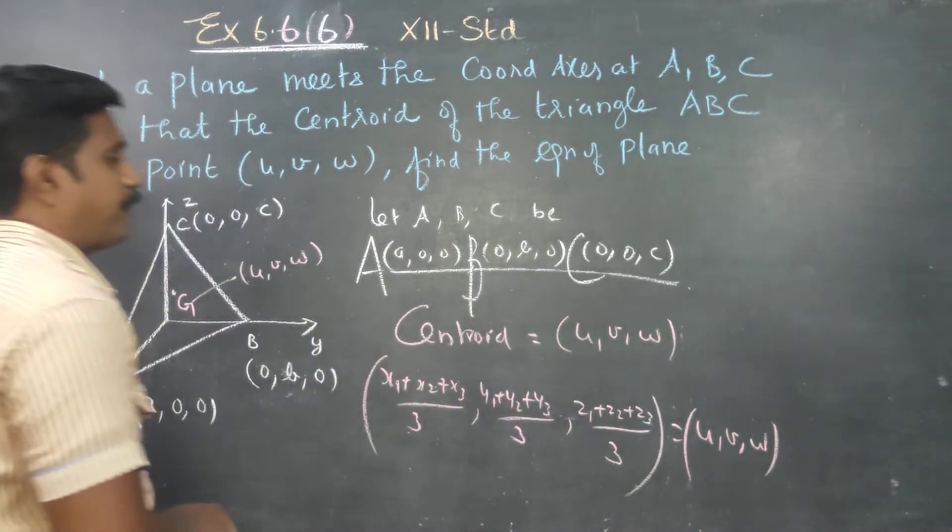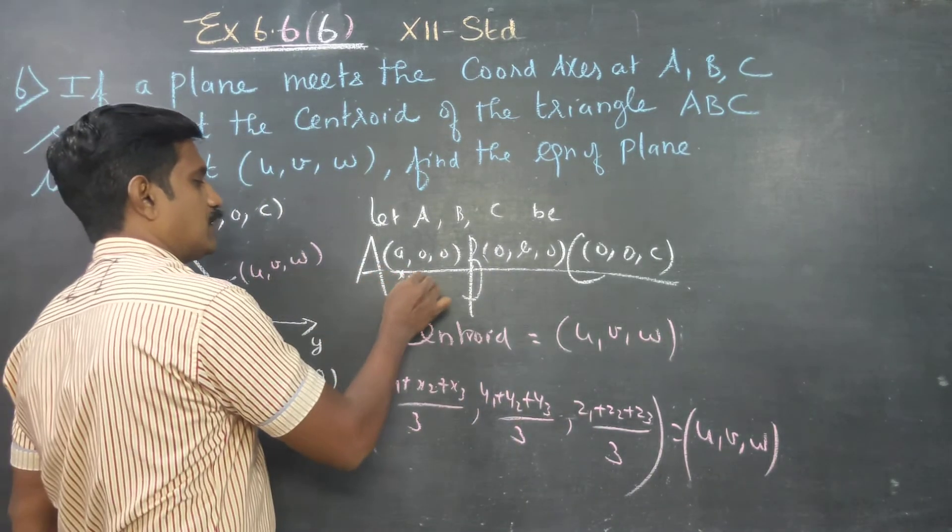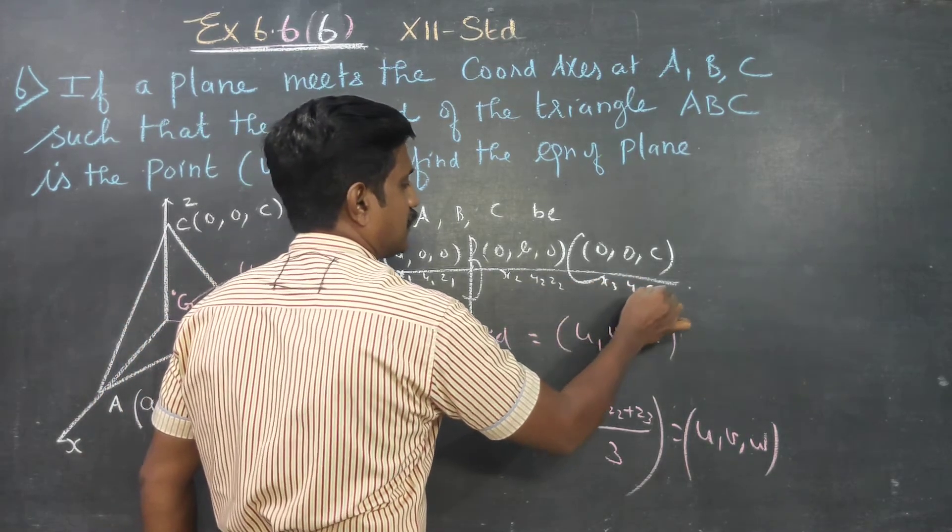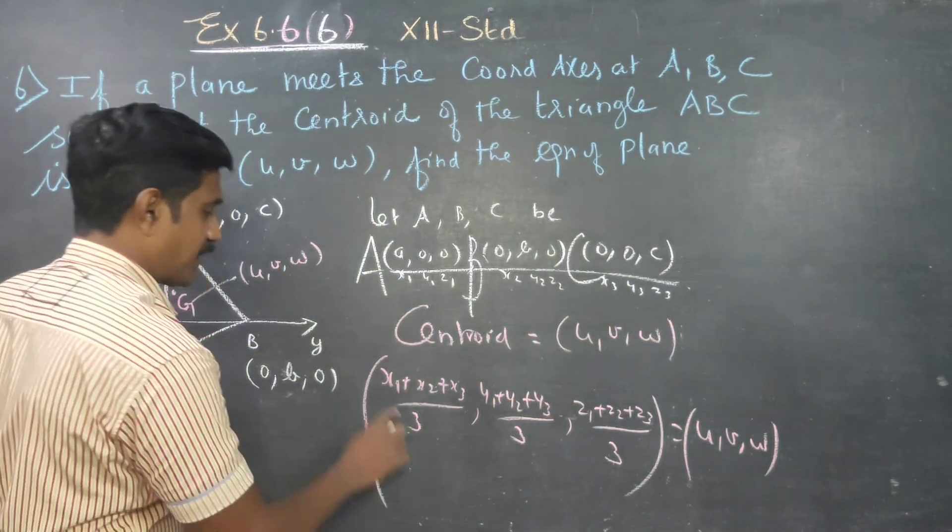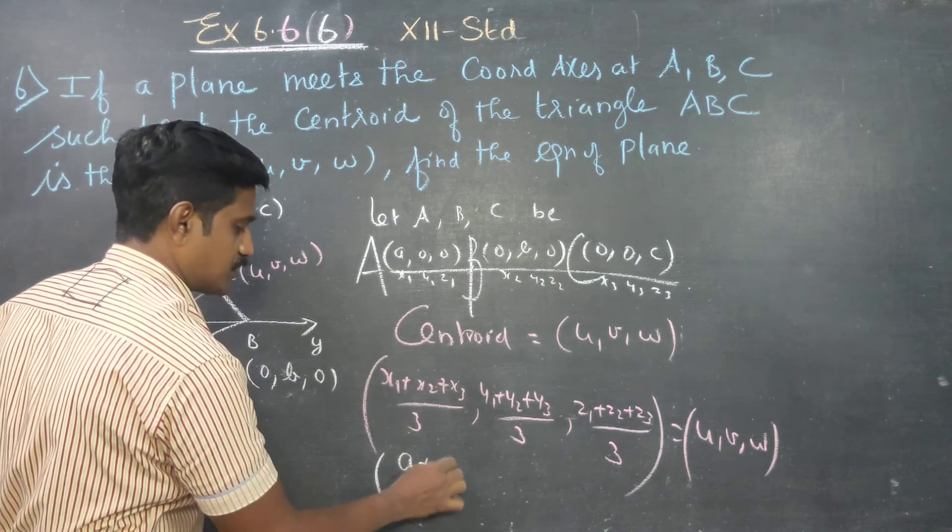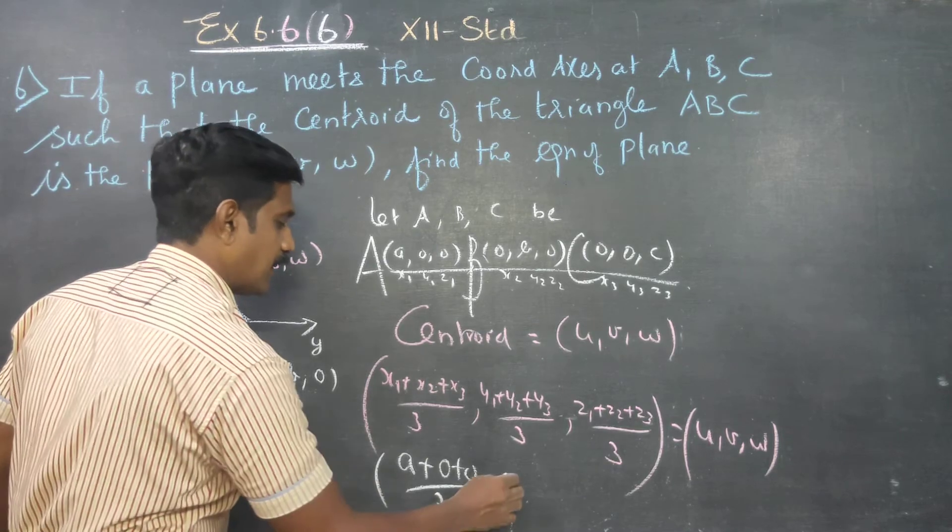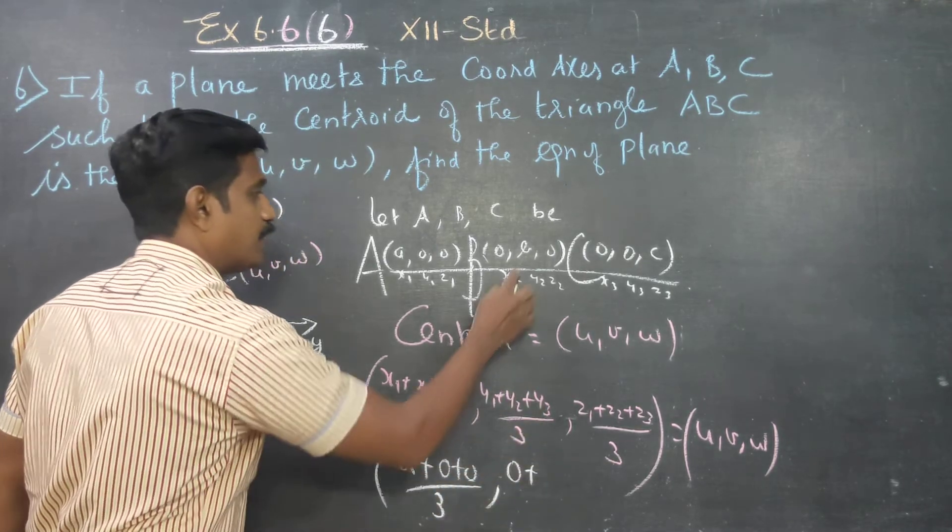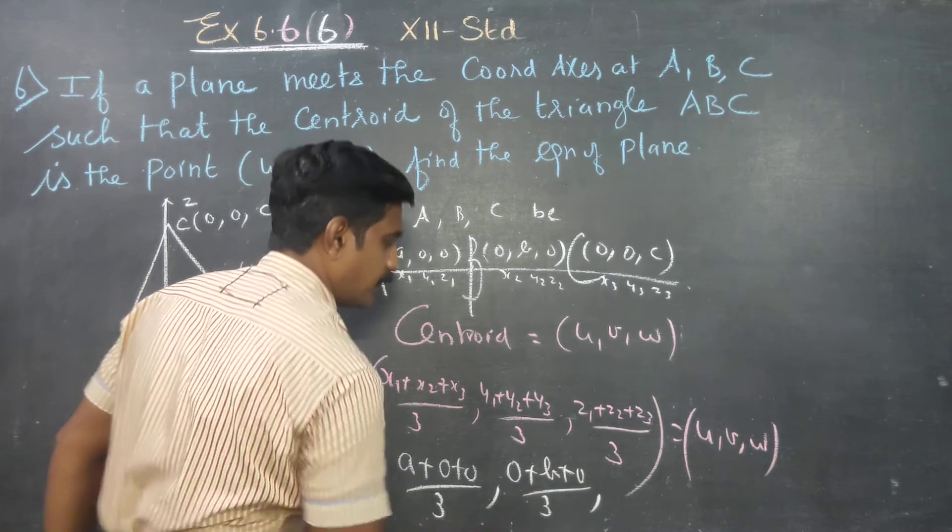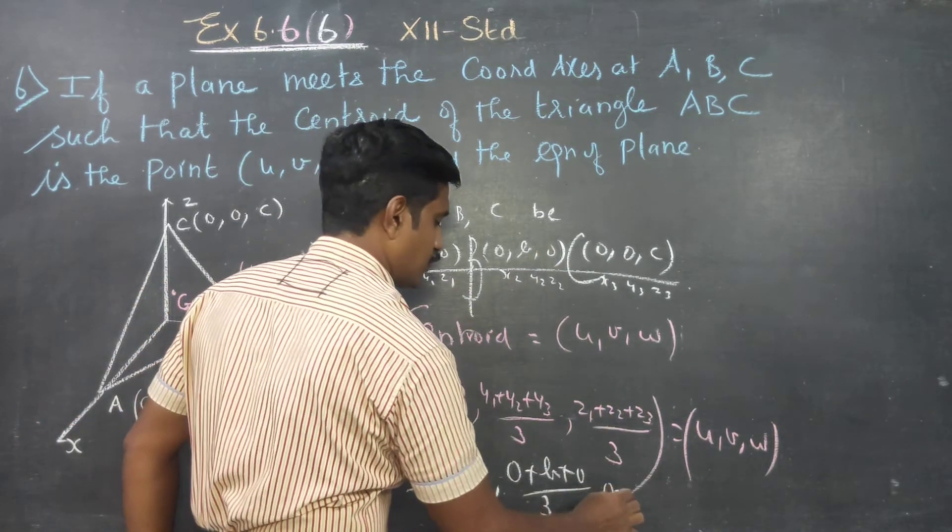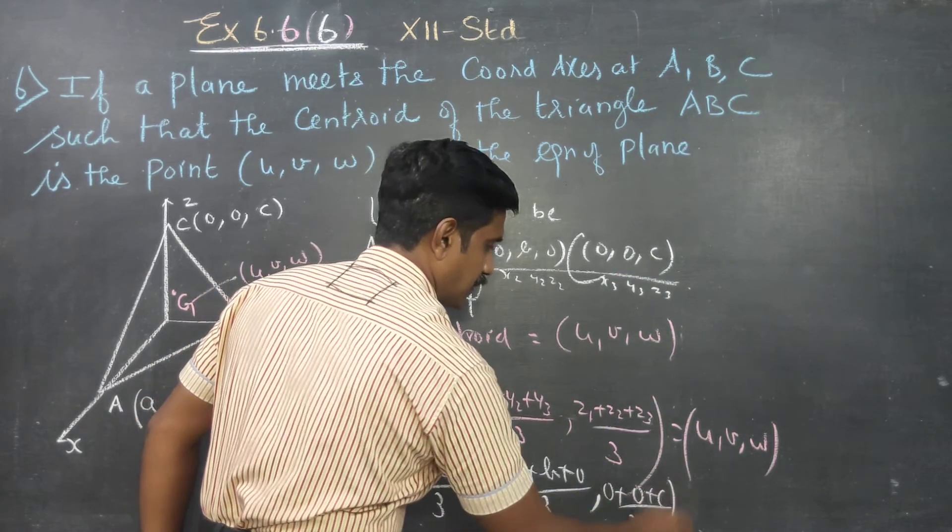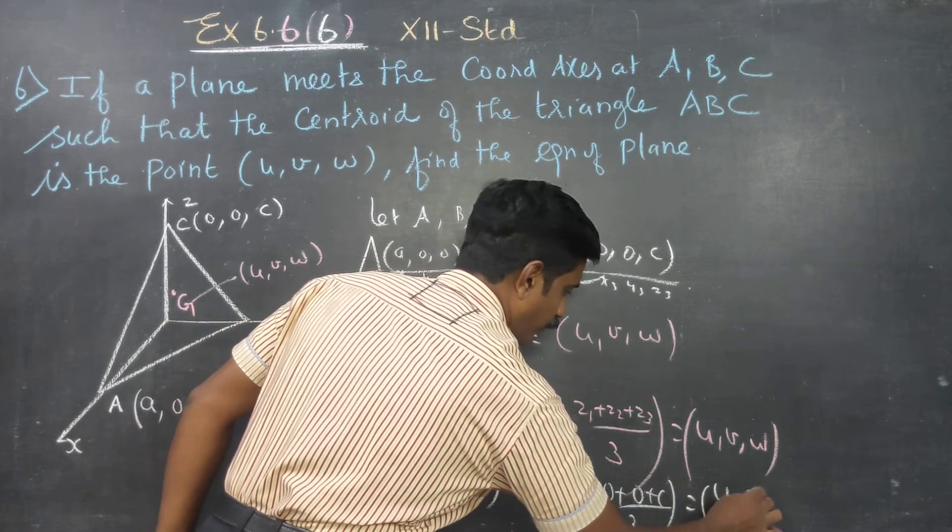For the three points: x1 is a, x2 and x3 are 0. Y1 is 0, y2 is b, y3 is 0. Z1 and z2 are 0, z3 is c. This equals (u, v, w).